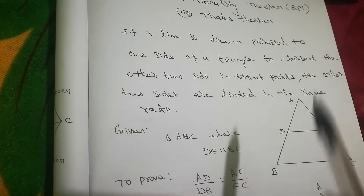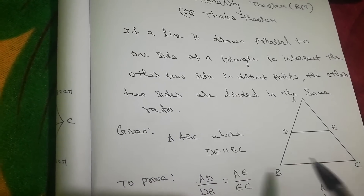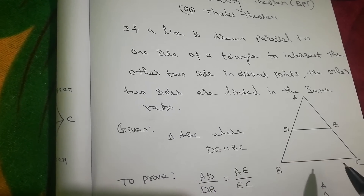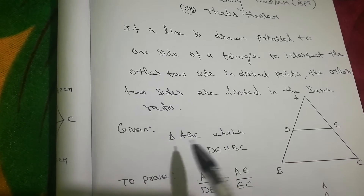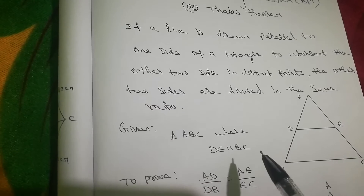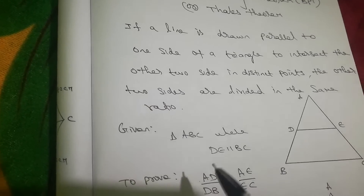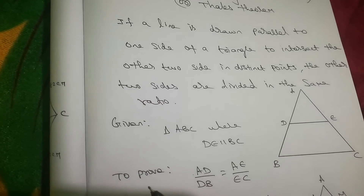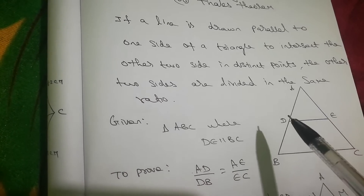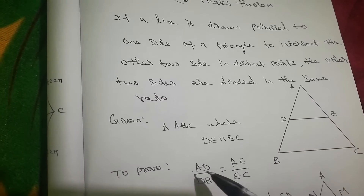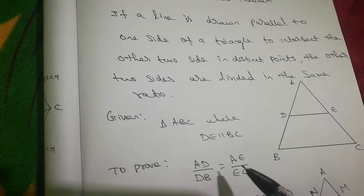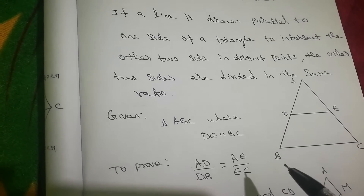Given: Triangle ABC where DE is parallel to BC. We have to prove that the ratios are equal, that is AD/DB = AE/EC.